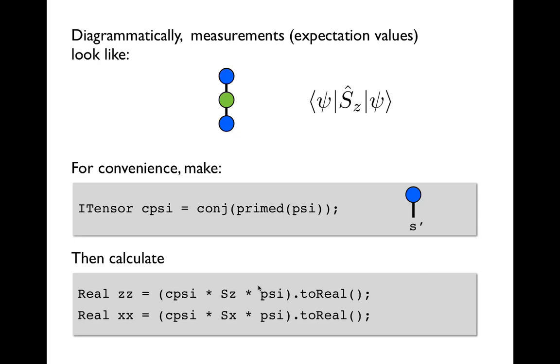But of course in C++ this will still be typed as a tensor. So to retrieve that single scalar component of it we just take the resulting tensor and call .toReal on it. And that will return the real number that's the single element of this scalar tensor. And similarly for our Sx expectation value.